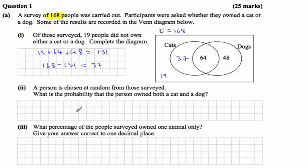Part 2 says a person is chosen at random from those surveyed. What is the probability that a person owned both a cat and a dog? Okay, well the people who owned both a cat and a dog would be these people here in the middle. So these 64 people. But if it's probability, the chance of selecting someone from that group is 64 out of the total, which we know is 168.